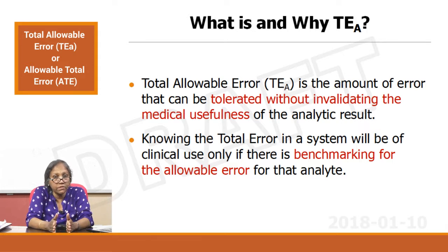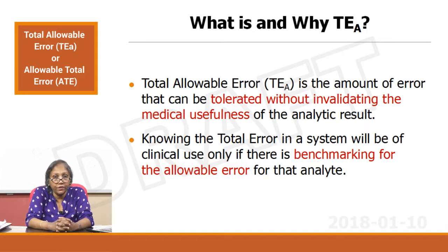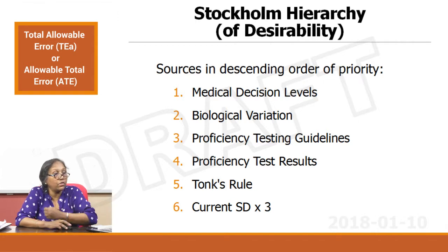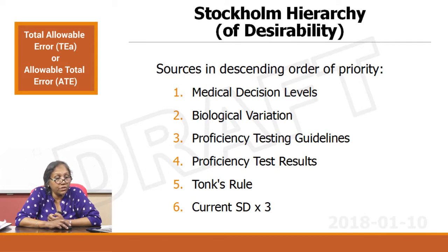You set your quality specification according to the clinical usefulness of that number, and it will also allow you to benchmark your quality specification — staying below the total allowable error in my laboratory for every analyte. So where will you get the TEa values from? There is a hierarchy called the Stockholm hierarchy of desirability. Your best TEa values will come from the medical decision levels. Second: biological variation charts.